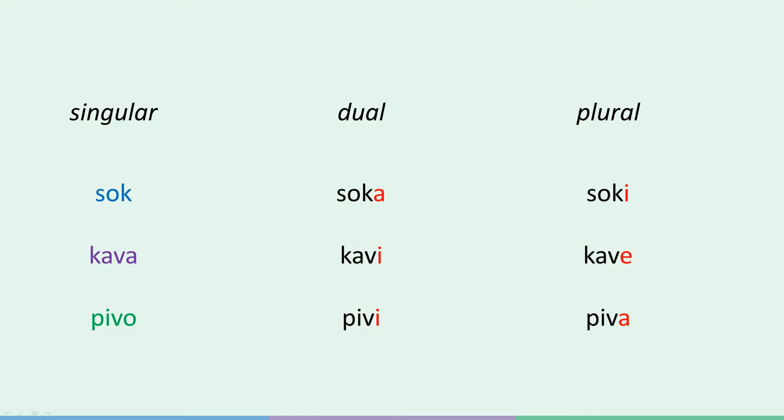Just to briefly review: on screen we have three nouns. Sok means juice and represents masculine nouns. Kava means coffee and represents feminine nouns. And pivo means beer and represents neuter nouns. So the table is essentially one juice, two juices, three juices in the top row; one coffee, two coffees, three coffees in the middle row; and one beer, two beers, three beers in the bottom row. That's number and gender. As far as case is concerned, all the words on screen are in the nominative, or the first case. And like we said, case is not important in today's lesson.